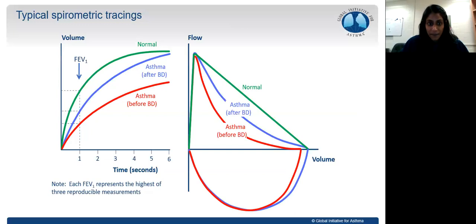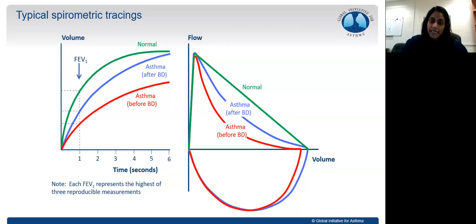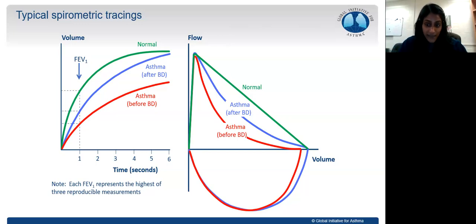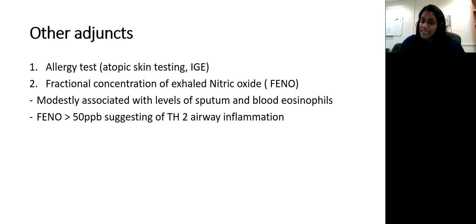Looking at the flow volume loops for asthma: in normal cases the curve is green. Asthma causes a reduction in FEV1 due to airway obstruction. Characteristically, the loop doesn't narrow — it's not a restrictive disease — but there is a scooping of the expiratory curve, as seen in the blue and red diagrams. The inspiratory loop should be preserved and the volume should be preserved as well.